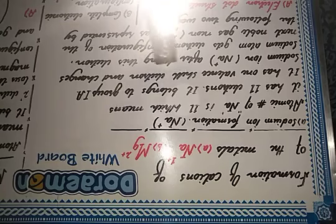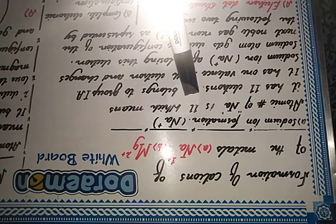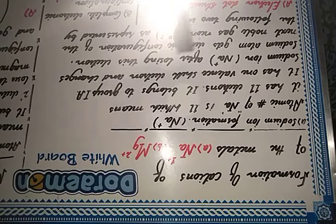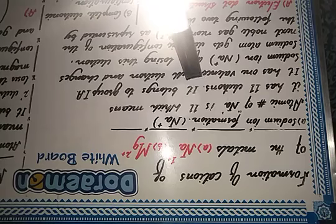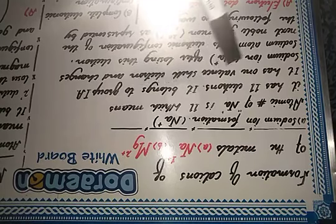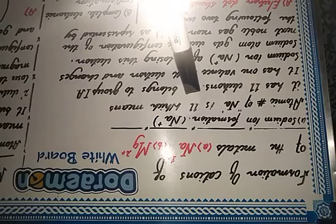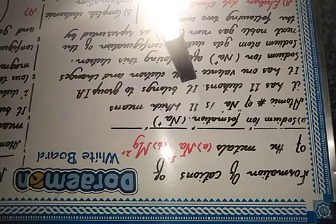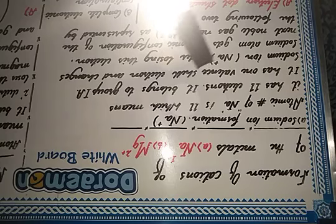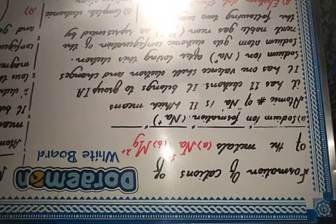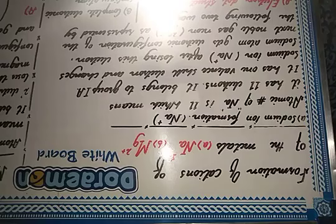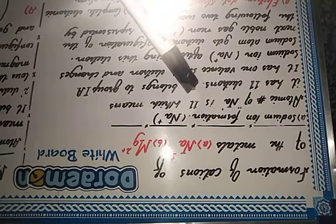The atomic number of sodium is 11. It is in the first group of the periodic table, on the left-hand side, which means it has 11 electrons. The atomic number of sodium is 11, which means that in the nucleus of the sodium atom you will find 11 protons, and in the shells surrounding the nucleus you will find 11 electrons.